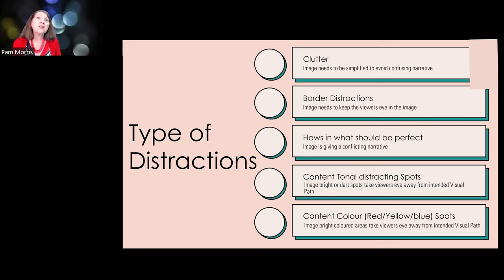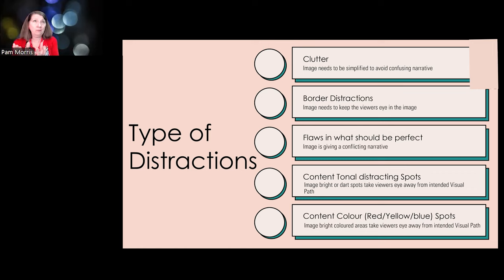Other distractions include things like the rose that had insect bites on its petals. It was a beautifully composed rose - absolutely stunning - but those insect bites were really distracting. These are the kinds of flaws you can easily remove from an image to take it from being a very ordinary image to something that's really beautiful.